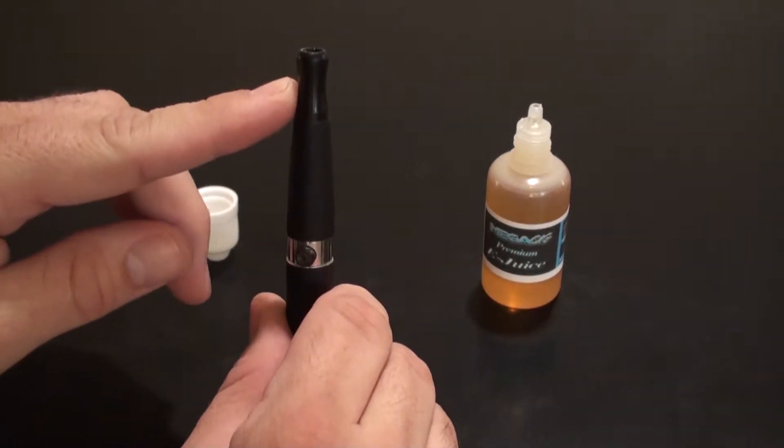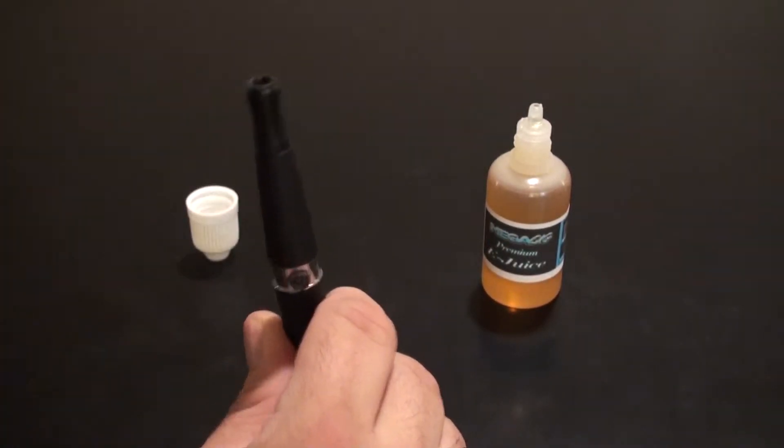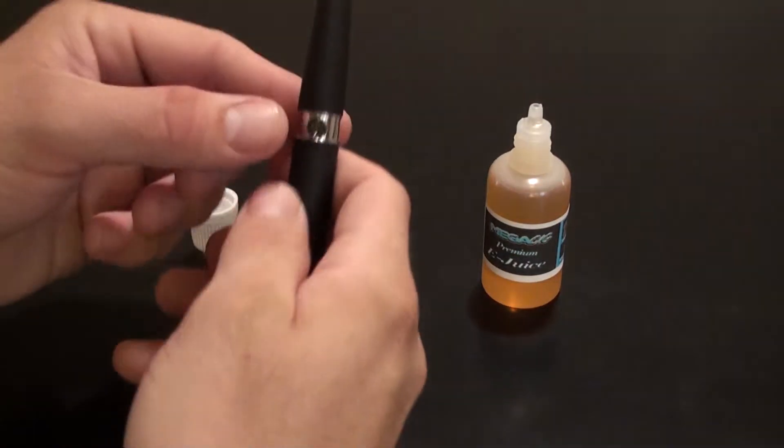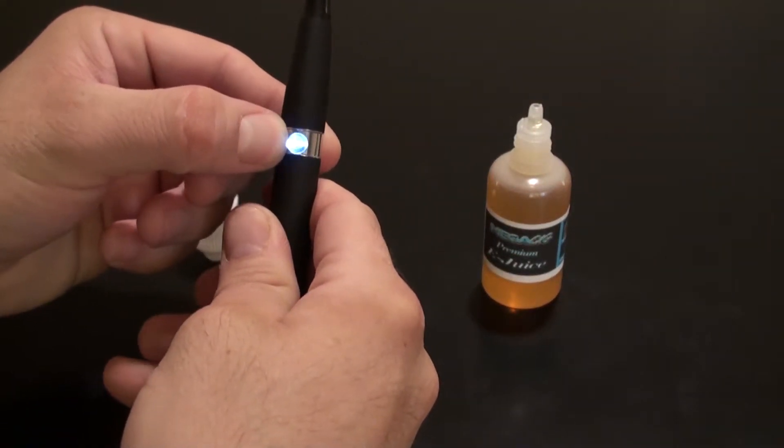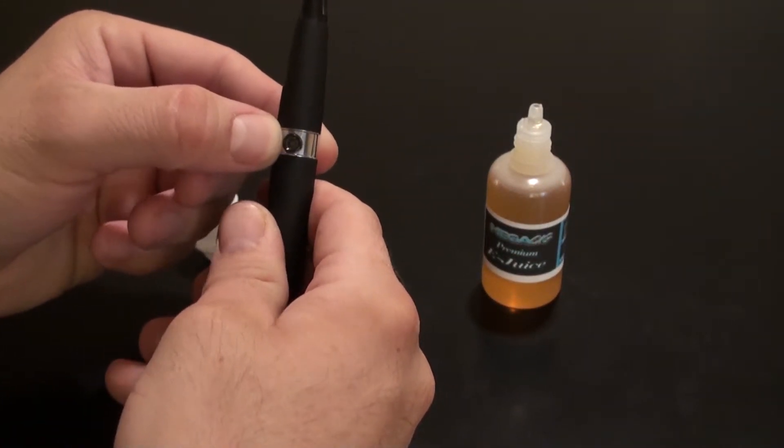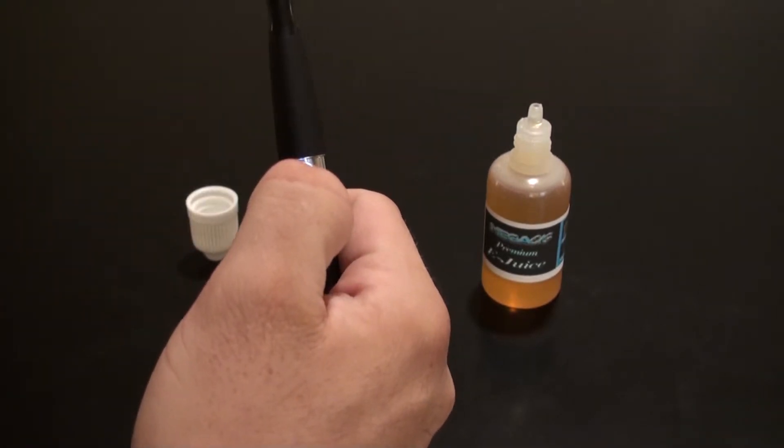Then blow slightly into the top of the drip tip, forcing the juice onto the atomizer. Pressing the button, you should see it light up. Press the button, inhale, and enjoy.